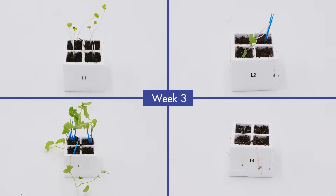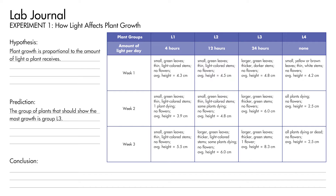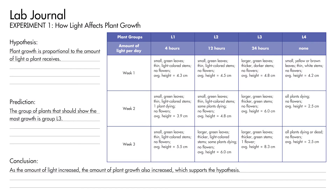Observe the four groups of plants at the end of week three. Record your observations and compare the average height of each group in your journal. The plants in group L1 are still thin, but they did grow. The plants in group L2 have larger leaves and thicker stems. The plants in group L3 are the healthiest and tallest. The plants in group L4 are dead. What can we conclude? As the amount of light increased, the amount of plant growth also increased, so our hypothesis is valid. Record your conclusion in your journal.